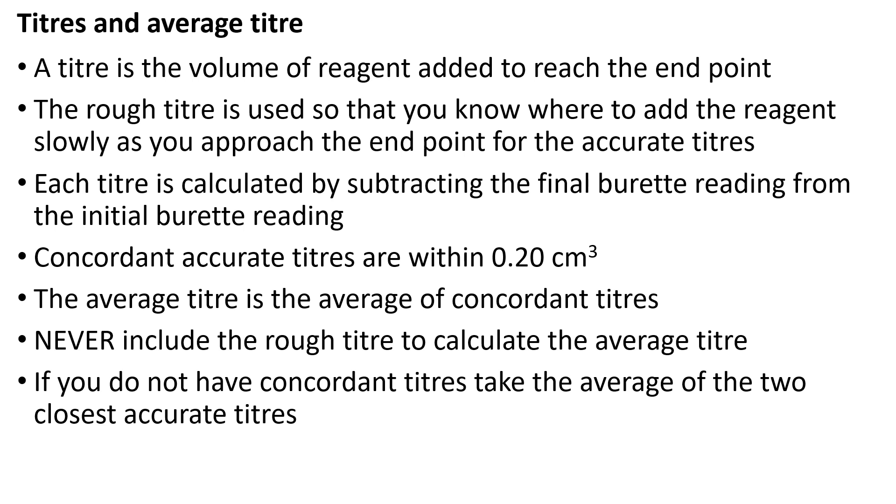A titer is the volume of reagent added to reach the end point. The rough titer is used so that you know where to add the reagent slowly as you approach the end point for the accurate titers. Each titer is calculated by subtracting the final burette reading from the initial burette reading. Concordant accurate titers are within 0.20 cm³.